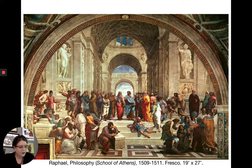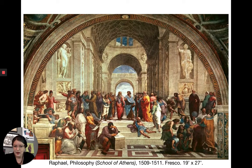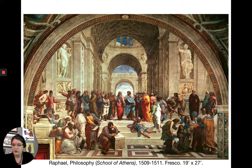Philosophy was made between 1509 and 1511 as a fresco. There are two kinds of fresco — fresco secco and fresco buono. This is fresco buono, which means you're painting on wet plaster so the paint becomes part of the wall itself. Raphael was born in Urbino in 1483 and died at only 37, so he didn't live as long as most masters of the time.